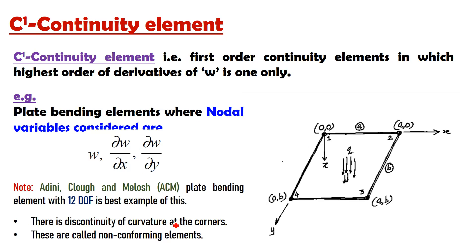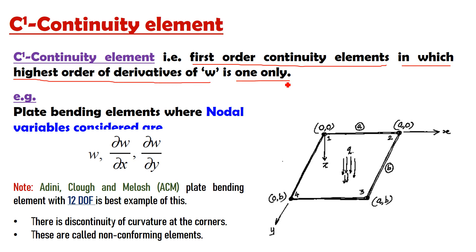Now the second is the C1 continuity element, which is also called as the first order continuity element. These are the elements in which the highest order of derivative of W is 1, that is only the first order derivatives of W are taken as nodal unknowns. So for example: W, DW/DX and DW/DY — only these three can be taken as unknowns at a node.